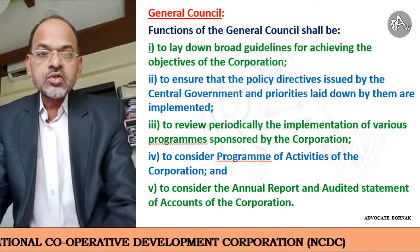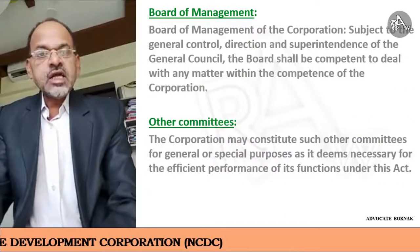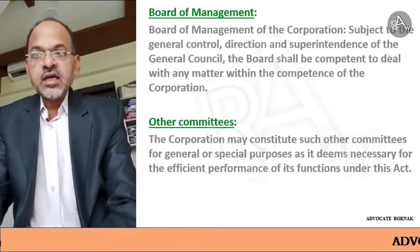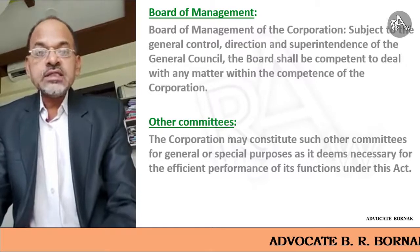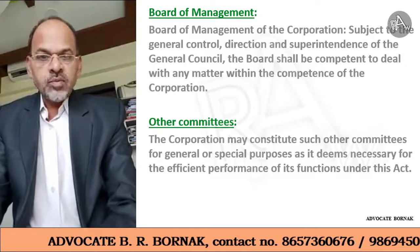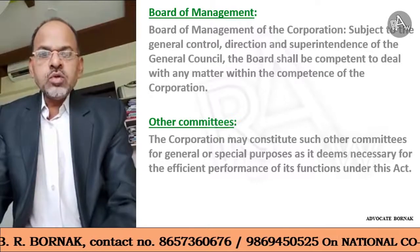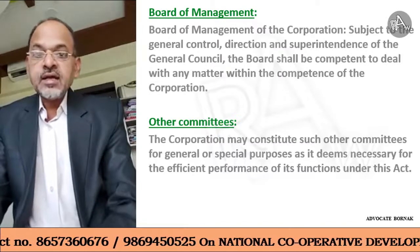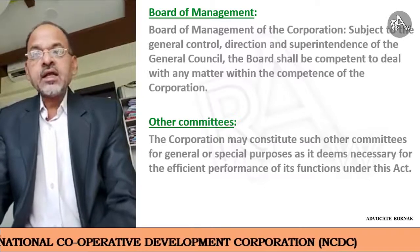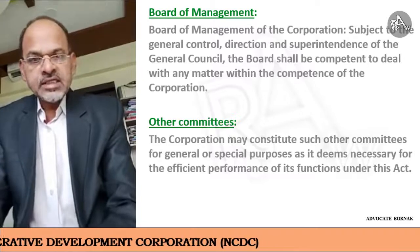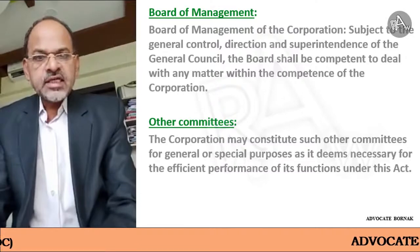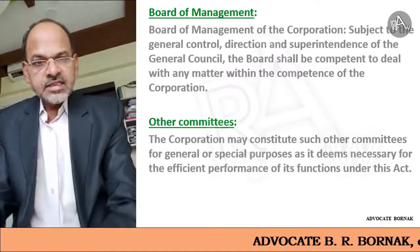To assist the General Council there is the Board of Management. The Board of Management is subject to the general control, direction and superintendence of the General Council. The board is competent to deal with any matter within the competence of the corporation. It implements the policy decisions taken by the General Council. The hierarchy is: NCDC, then General Council, then Board of Management, then other committees and subcommittees.